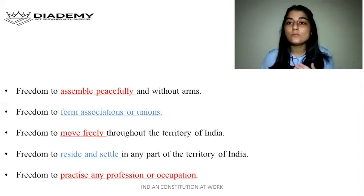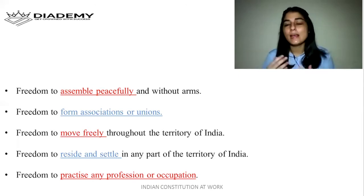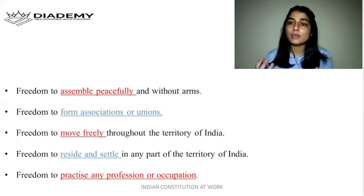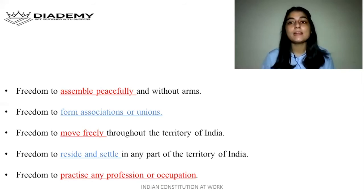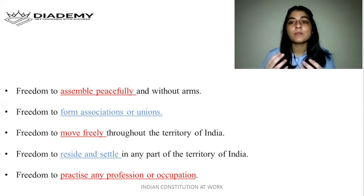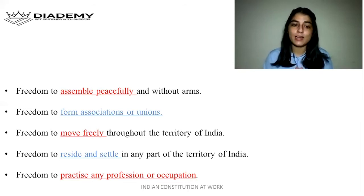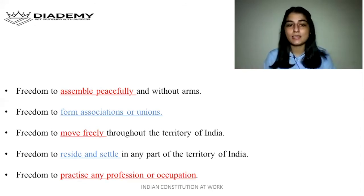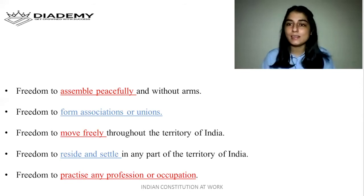So these are the six types of freedoms provided under Article 19: freedom of thought and expression; freedom to assemble peacefully and without arms; freedom to form associations or unions; freedom to move freely throughout India; freedom to reside and settle anywhere in India; and freedom to practice any profession or occupation.